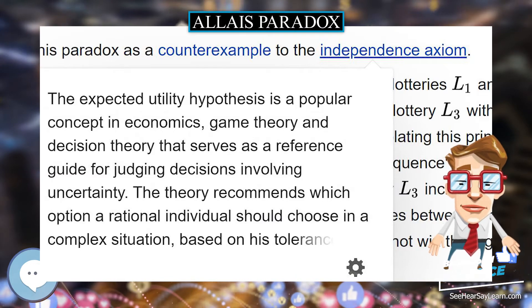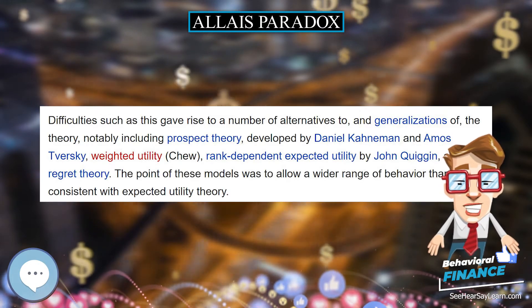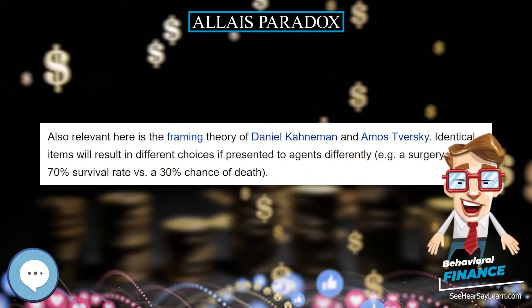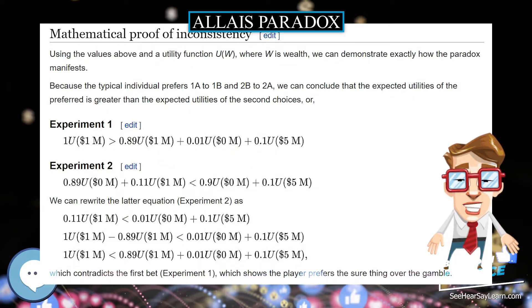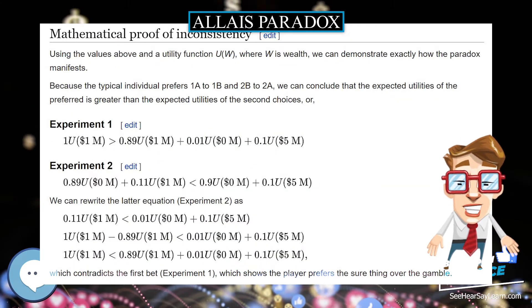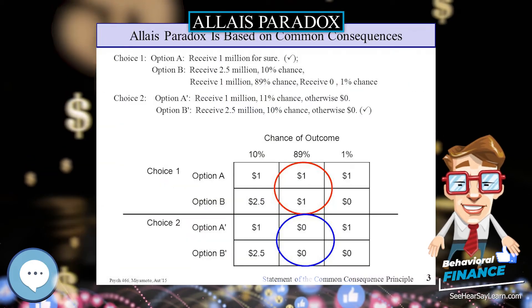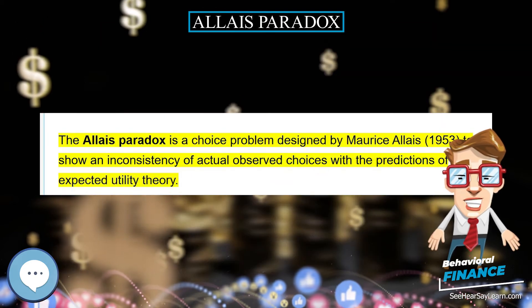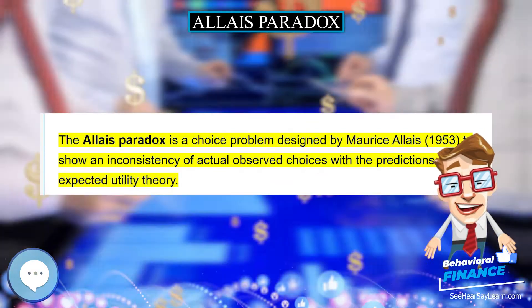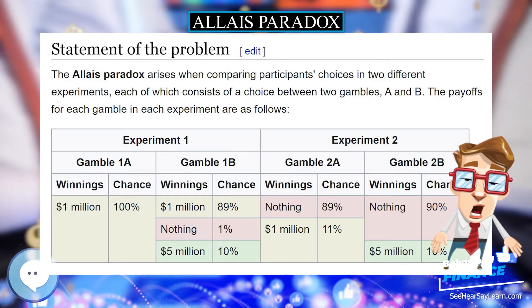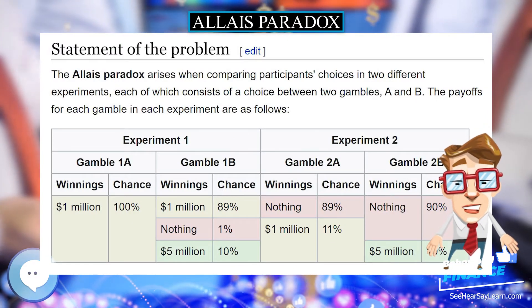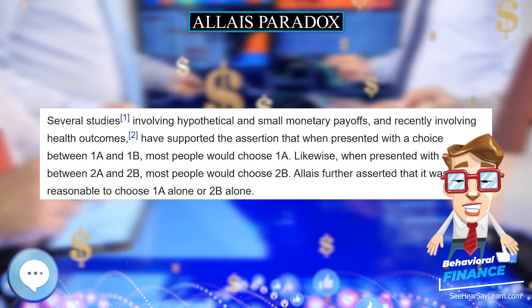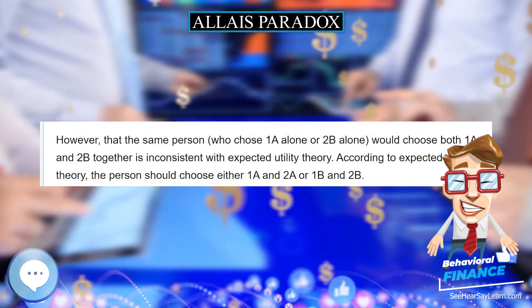Difficulties such as this gave rise to a number of alternatives to, and generalizations of, the theory, notably including prospect theory developed by Daniel Kahneman and Amos Tversky, weighted utility, rank dependent expected utility by John Quiggin, and regret theory. The point of these models was to allow a wider range of behavior than was consistent with expected utility theory. Also relevant here is the framing theory of Daniel Kahneman and Amos Tversky: identical items will result in different choices if presented to agents differently, for example a surgery with a 70% survival rate versus a 30% chance of death.